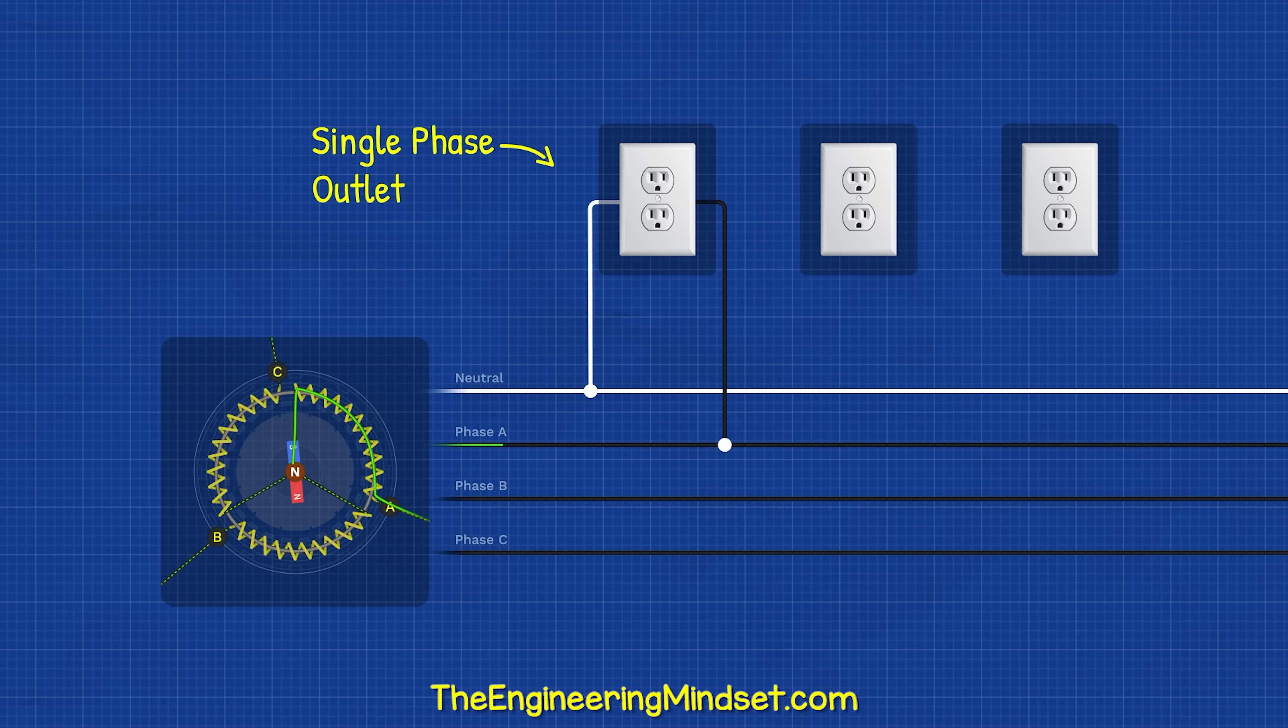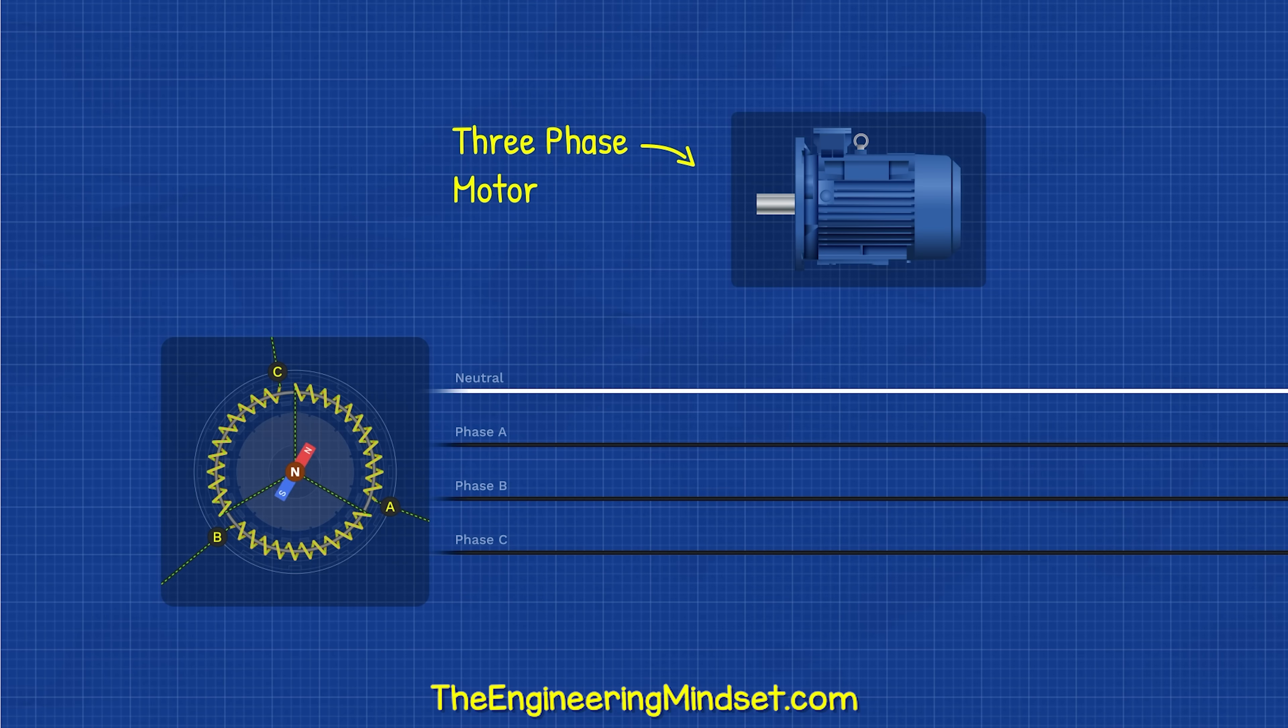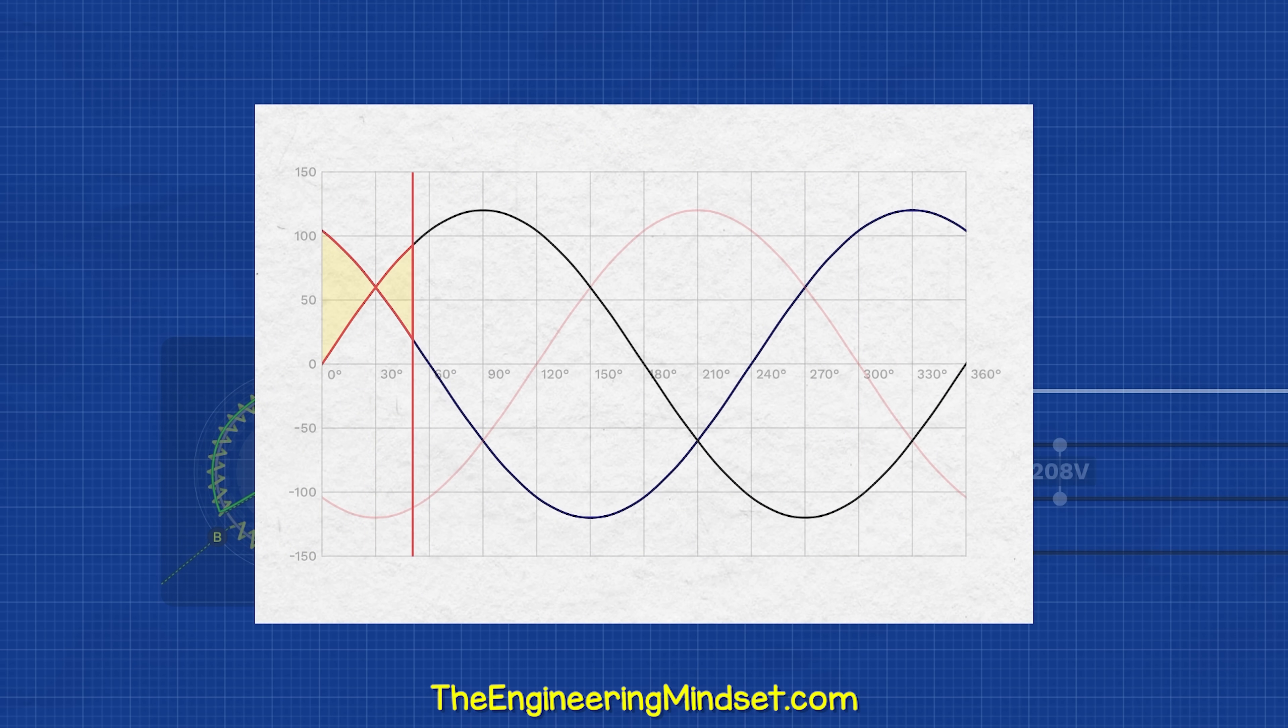We're basically just connecting across one coil of the generator or transformer. We can do that on each phase, or we can connect to all three phases for larger equipment like motors. This connects across two coils, but the phases occur at different times, so the voltage isn't quite double, it's just the difference between the two sine waves.